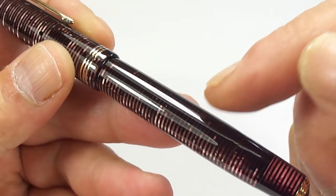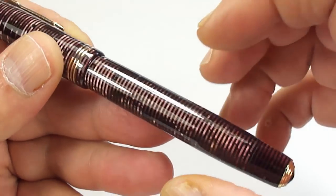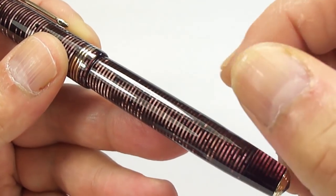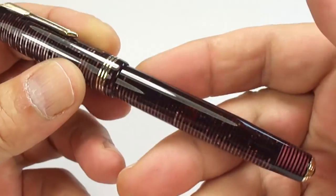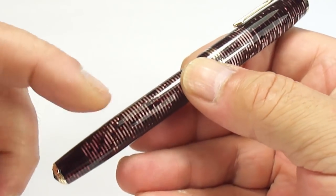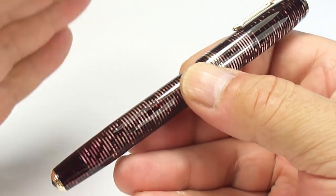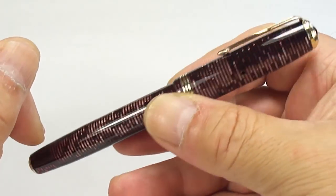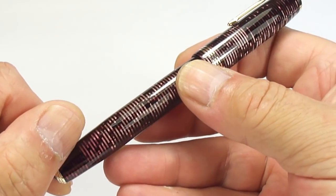What I can also make out is that, again with a loop, at the end is a date number, being the number eight, with two dots. Now that is dating the pen to 1938. It's dating the pen to the second quarter, i.e. the two dots. So it's the second quarter of 1938.